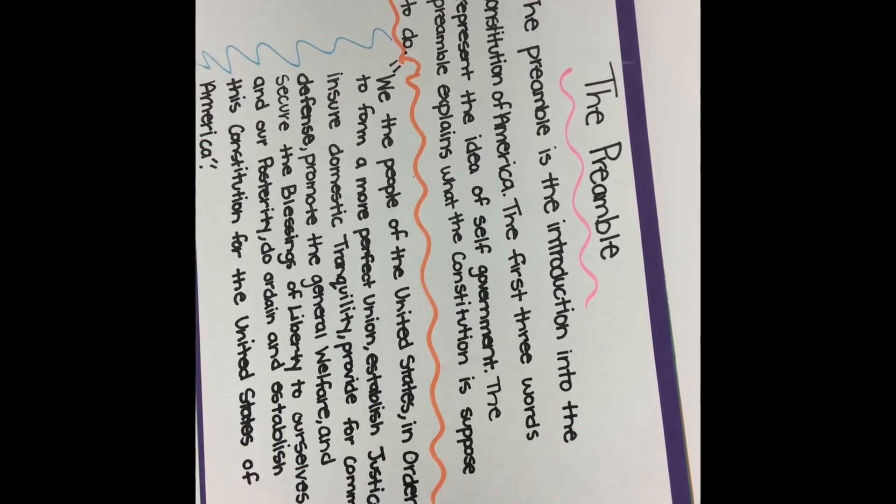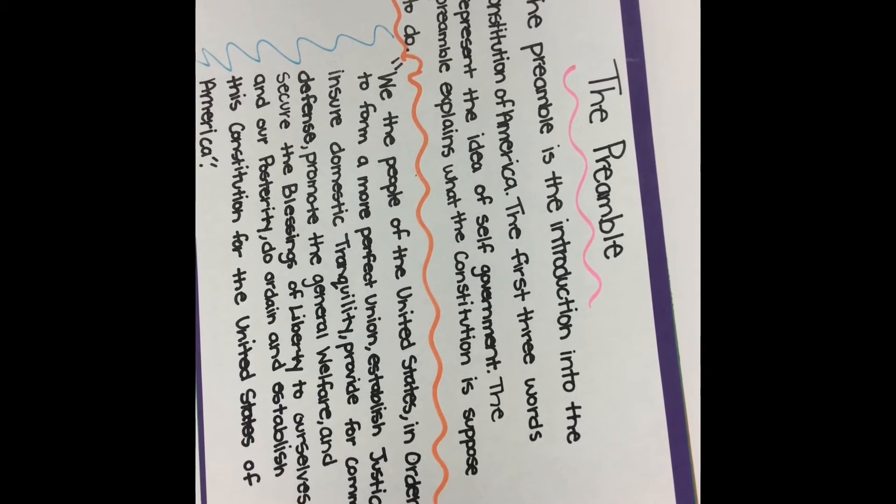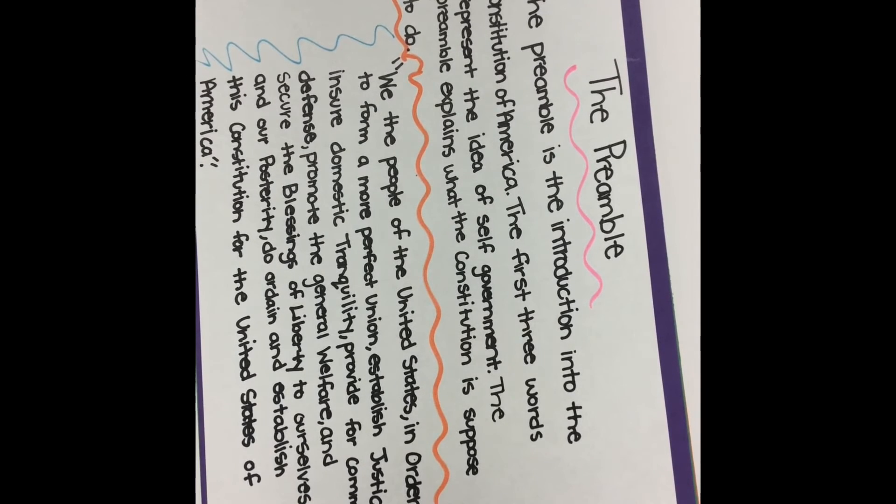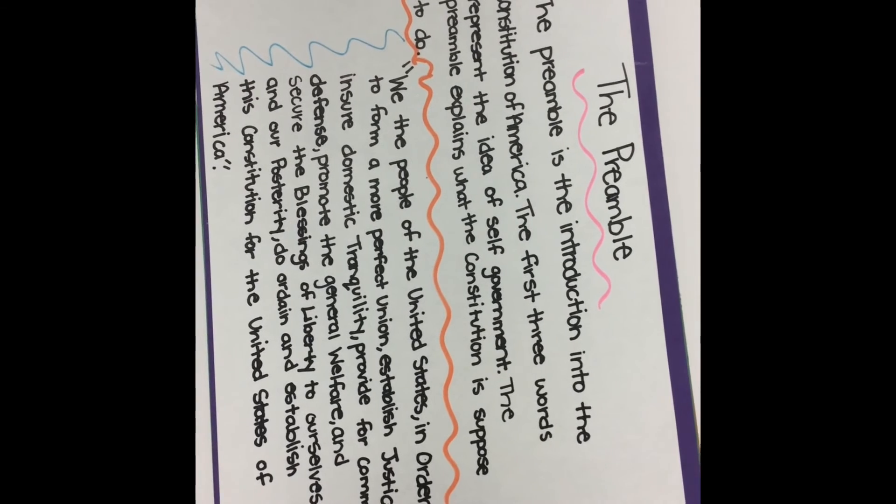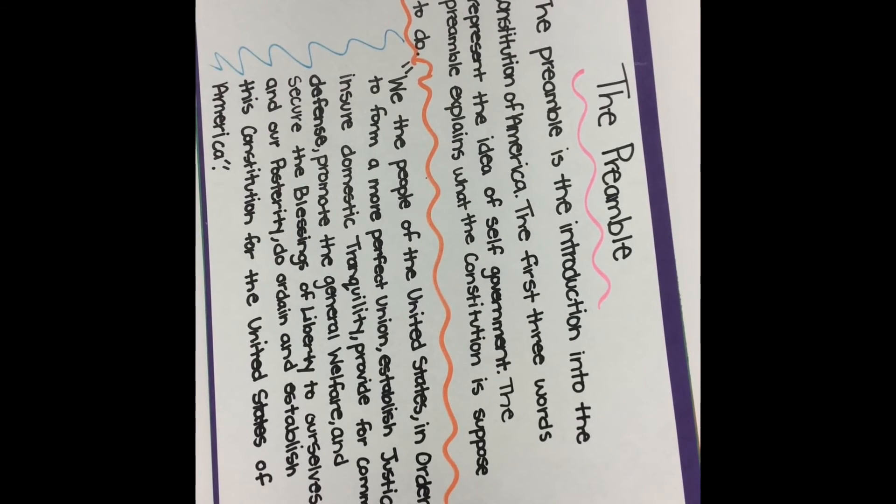We the people of the United States, in order to form a more perfect union, establish justice, ensure domestic tranquility, provide for the common defense, promote the general welfare, and secure the blessings of liberty to ourselves and our posterity, do ordain and establish this Constitution for the United States of America.